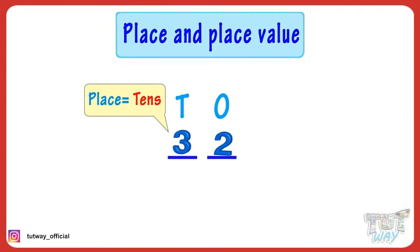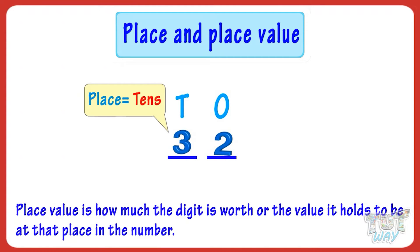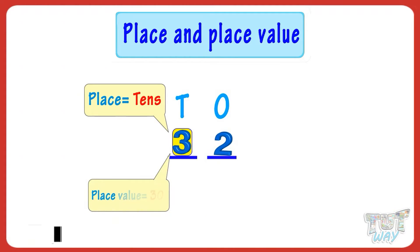Place of three in this number is tens place. Place value is how much the digit is worth or the value it holds at that place in the number. For example, place value of three in this number is three tens or thirty.